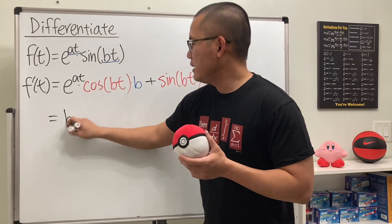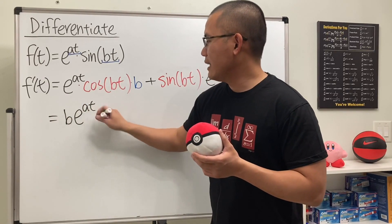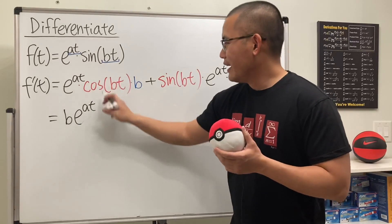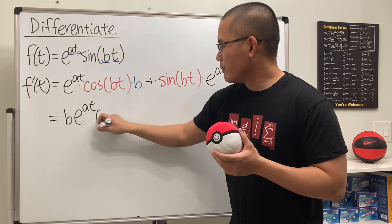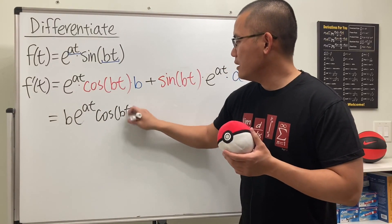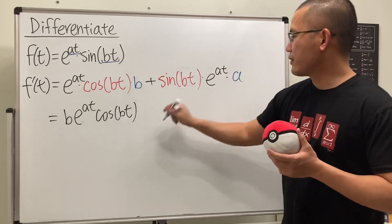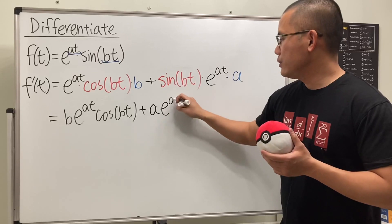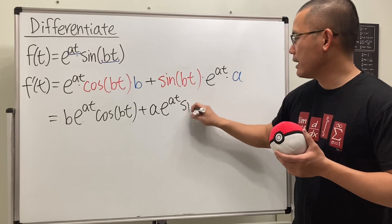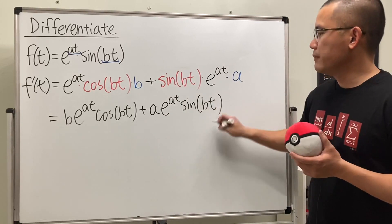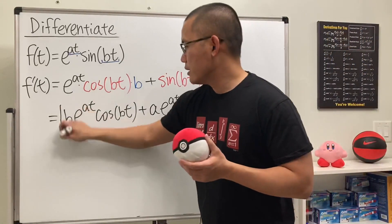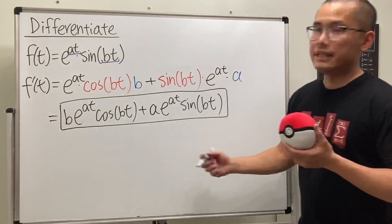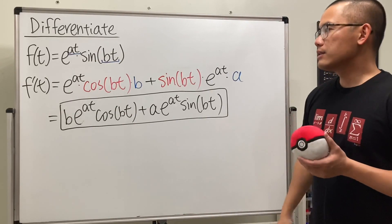In the end, let me put the constants in front. We have b times e to the at, multiplied by cosine of bt, and then plus a times e to the at, multiplied by sine of bt. This right here is a pretty good-looking answer.